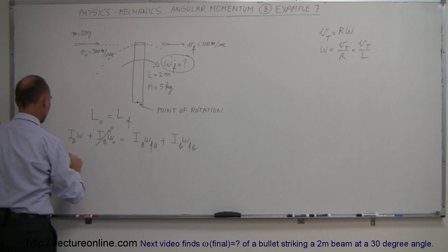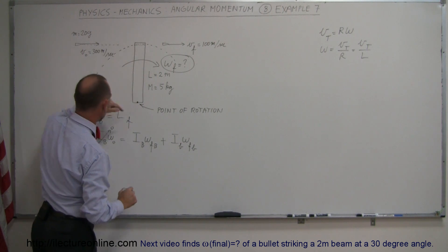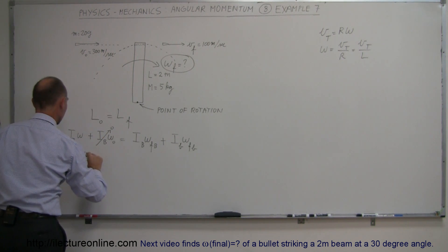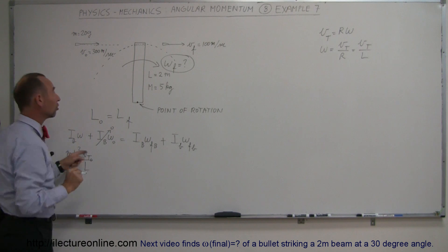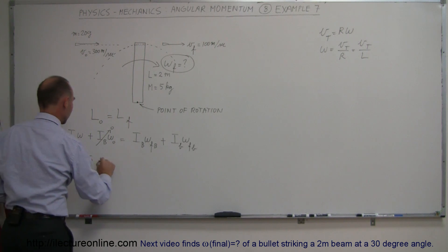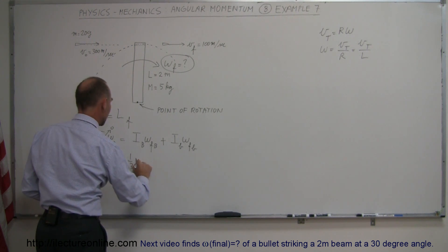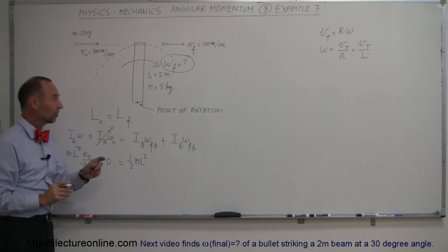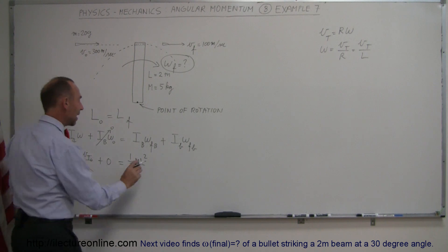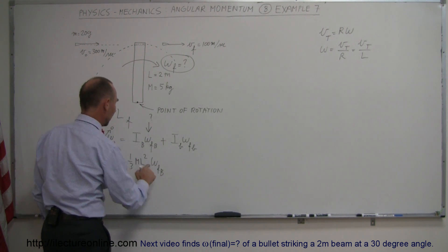The moment of inertia of the bullet is ML squared, since all the mass is at the very end at distance L. Multiplying by omega, which is V-tangential over L, gives ML squared times V over L. The L cancels, leaving MLV for the initial term. Plus zero equals the moment of inertia of the beam — one-third the mass of the beam times L squared, since it rotates about its end — times omega-final of the beam, which is what we're solving for.